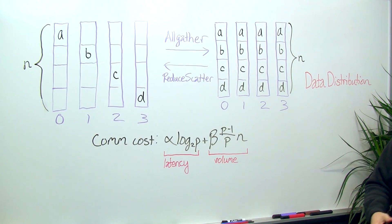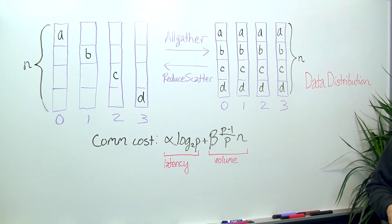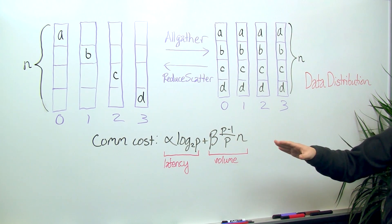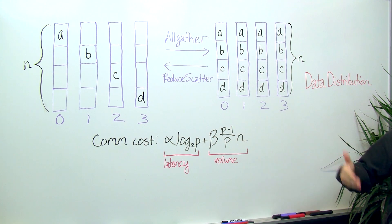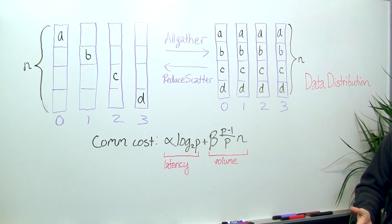In summary, what it does is if we have a vector of length n, in this case we have a diagram set up for four processes, then what we can do is split that message up into four different pieces. Let's call those four different pieces A, B, C, and D.